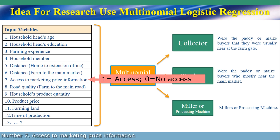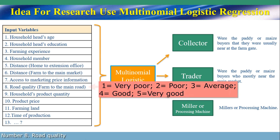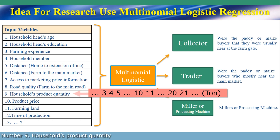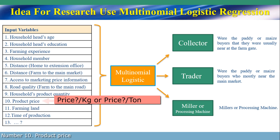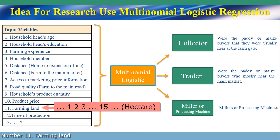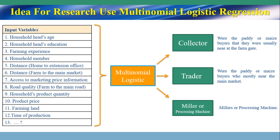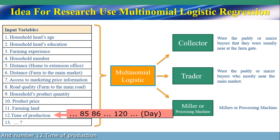Number 7: access to marketing price information. Number 8: road quality — this variable talks about the road quality from farm location to the main road. Number 9: household product quantity. Number 10: product price. Number 11: farming land. Number 12: time of production.